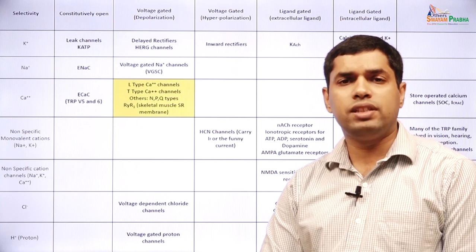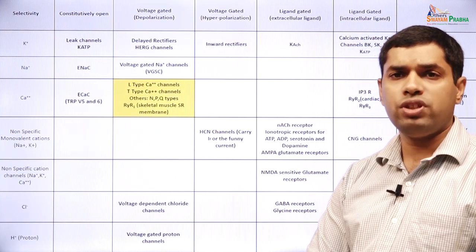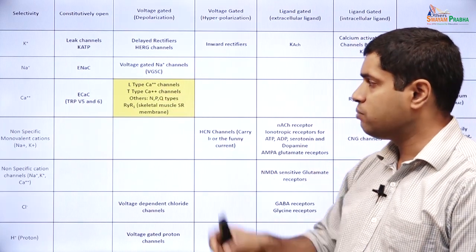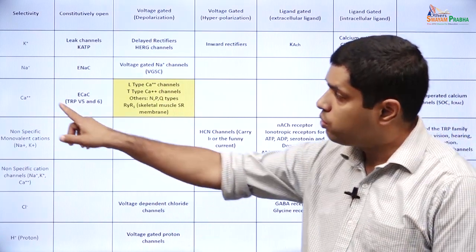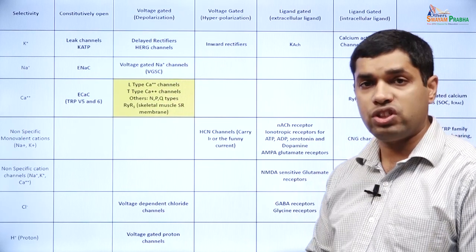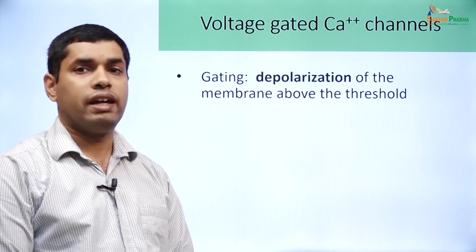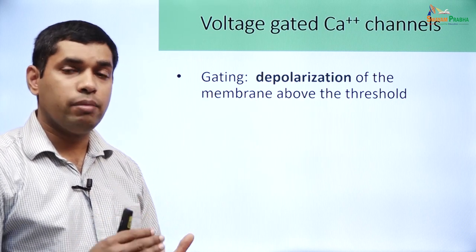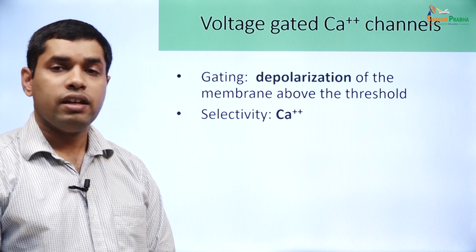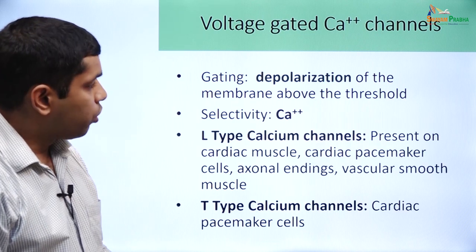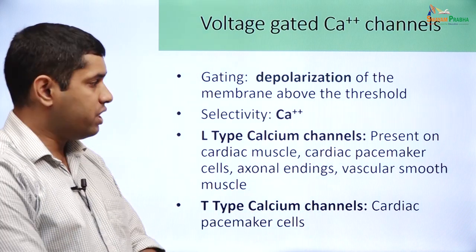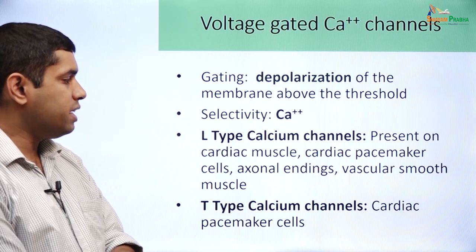Another channel that can cause depolarization is the voltage-gated calcium channel. There are two types: the L-type calcium channel and the T-type calcium channel. These are calcium channels that are voltage-gated — when the membrane depolarizes above a particular threshold, these channels open. They are selective for calcium. They are present on cardiac muscle, cardiac pacemaker cells, axonal endings, and vascular smooth muscle.